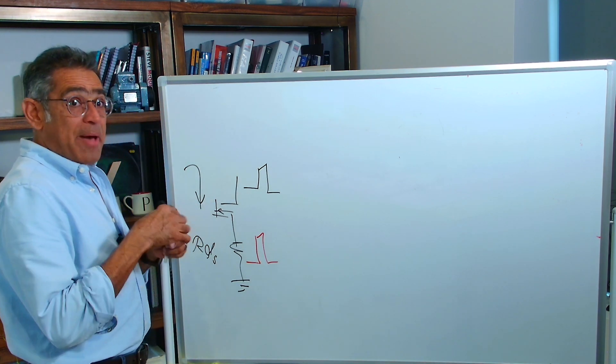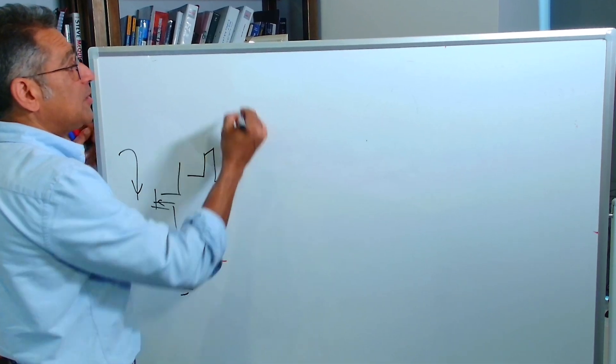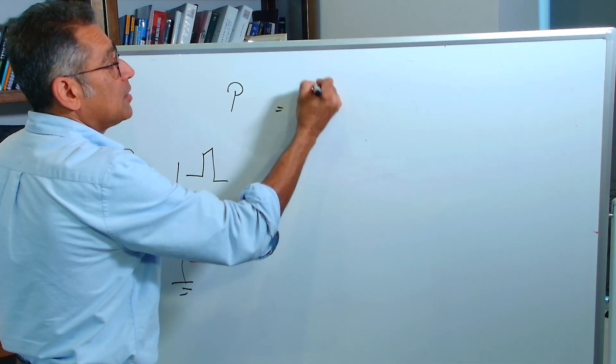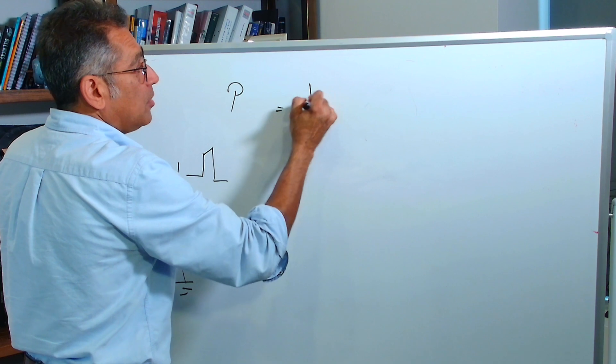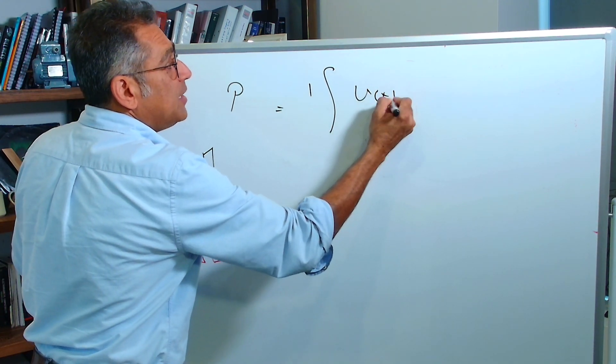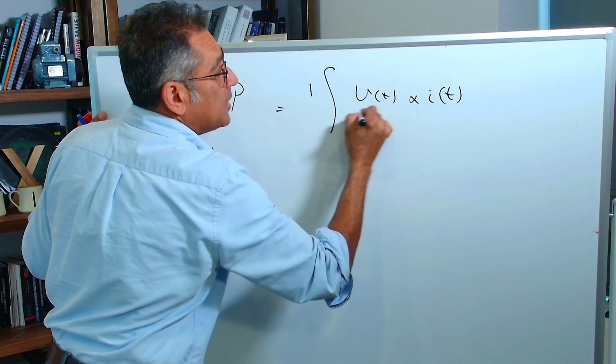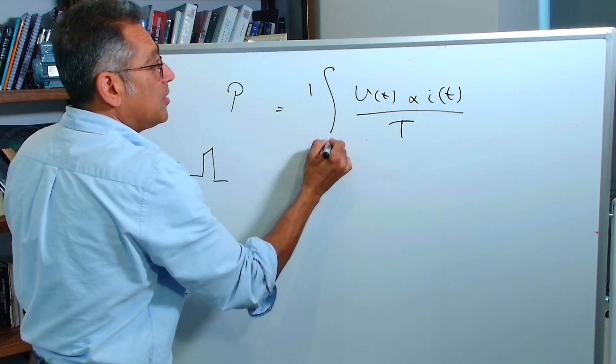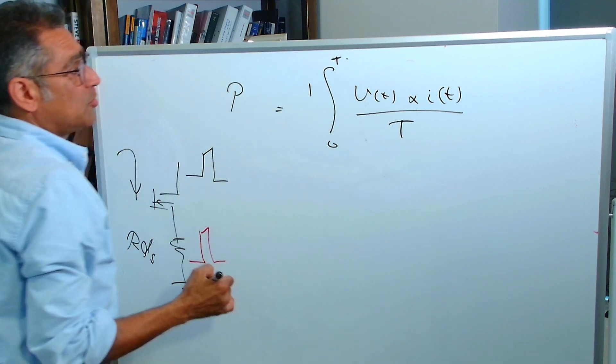Again, the power average over one period, power would be one, would be integral of V of T times I of T, divided by my period between 0 to T.